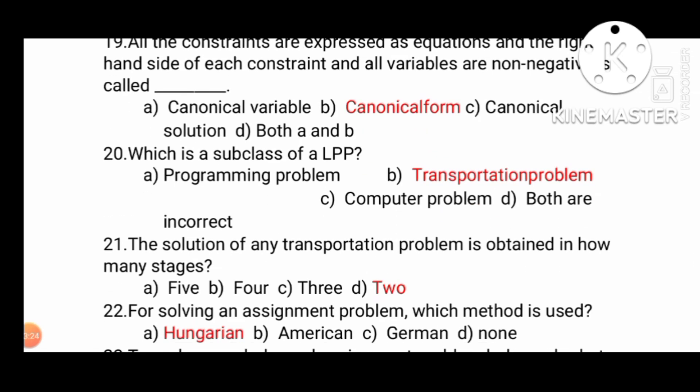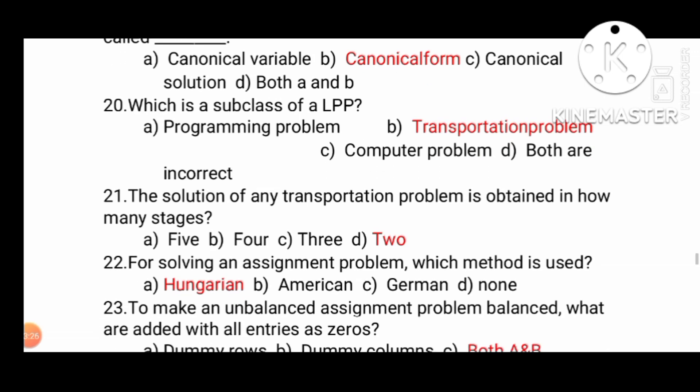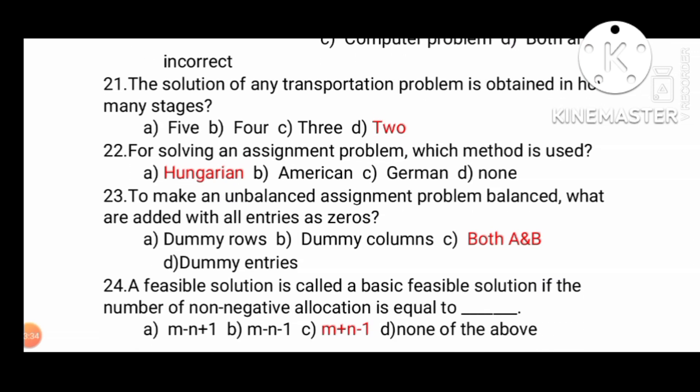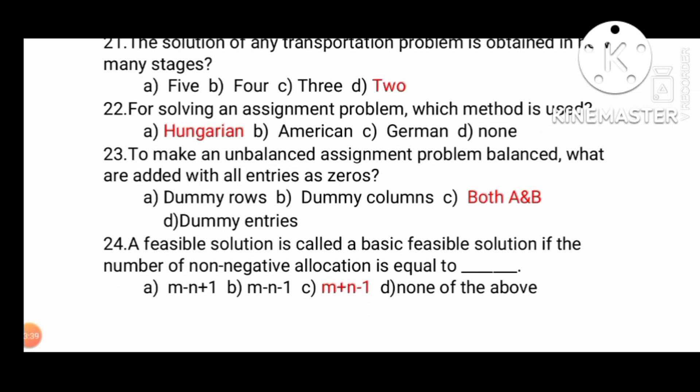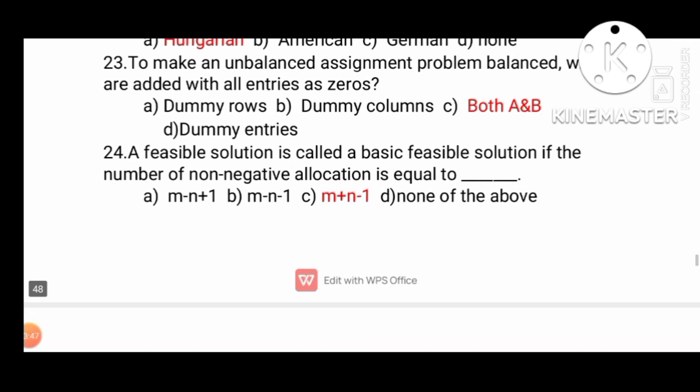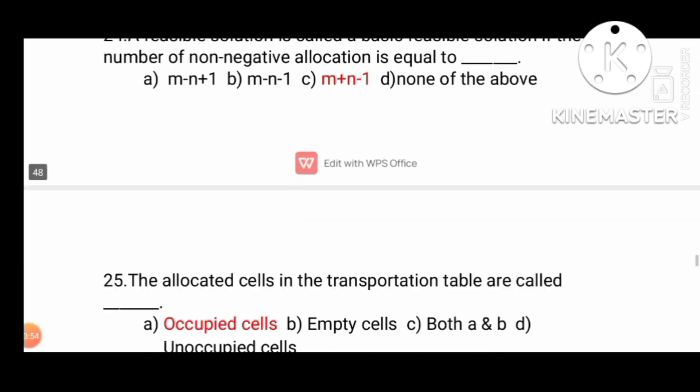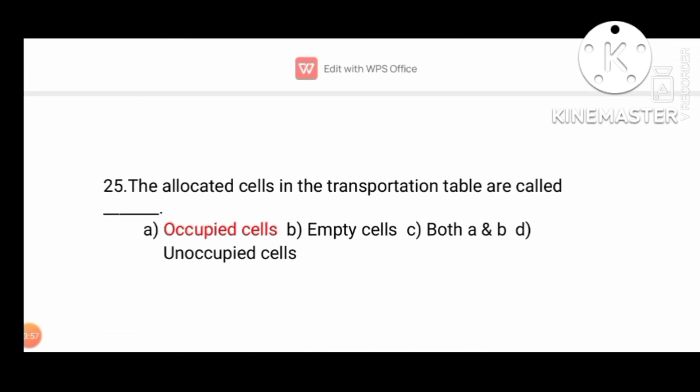This is a subclass of LPP - transportation problem. The solution of any transportation problem is how many stages? Two stages. For solving the assignment problem which method is used? Hungarian method. The assignment problem uses Hungarian method. To make an unbalanced assignment problem, zeroes are added in rows, both A and B. The feasible solution is called the basic feasible solution with non-negative allocation of M plus N minus 1. Very important. The last question: the allocated cell in transportation is called the occupied cell.